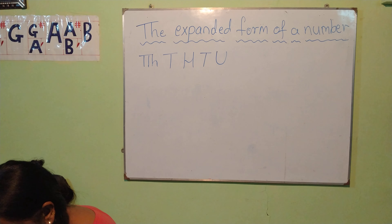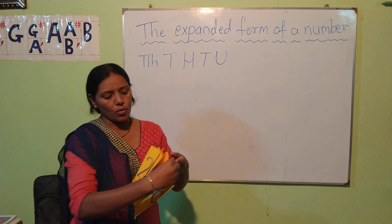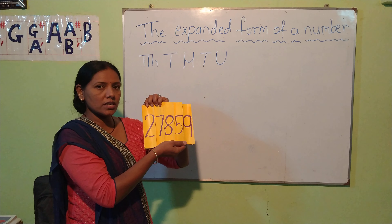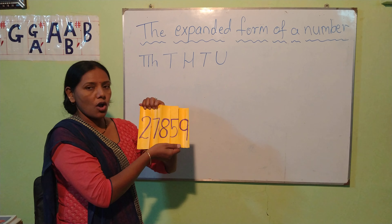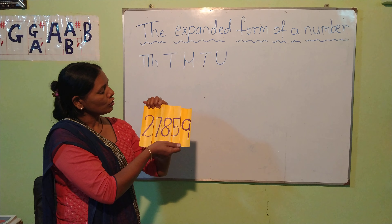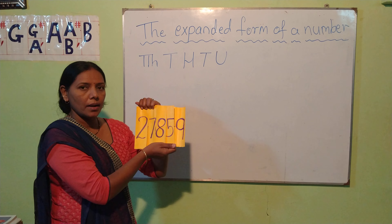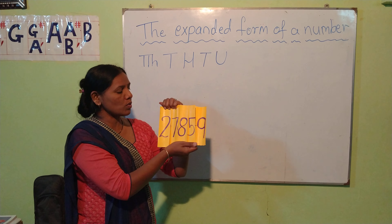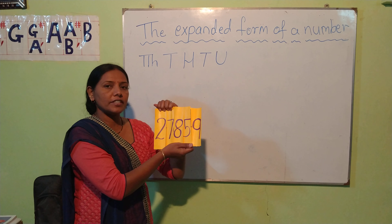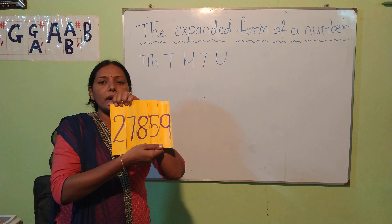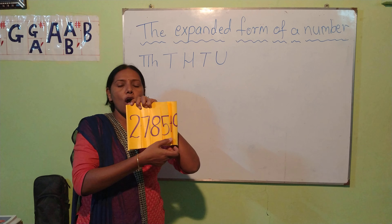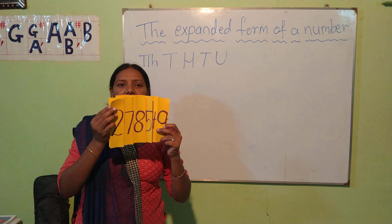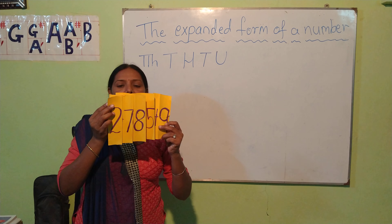Now, can you see this number? Read this number. If you read single digits: 2, 7, 8, 5, 9. But when you read the whole number, it is 27,859. Now we will expand this number — elaborate it like an elastic, stretch it like an elastic.